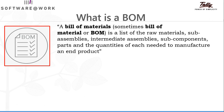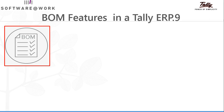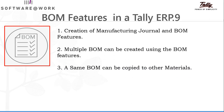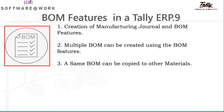During the process of production of the final product, scrap is also generated. Now, what are the different BOM features in Tally ERP 9? First of all, we can use the manufacturing journal and the BOM features. Second, multiple BOMs can be created. Third, a same BOM can be copied to other materials.